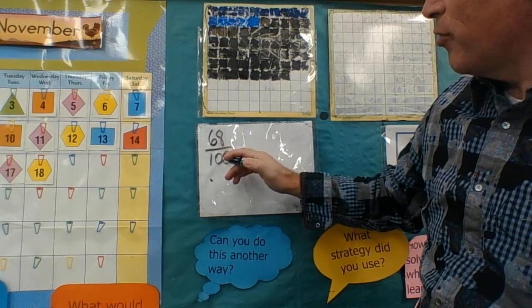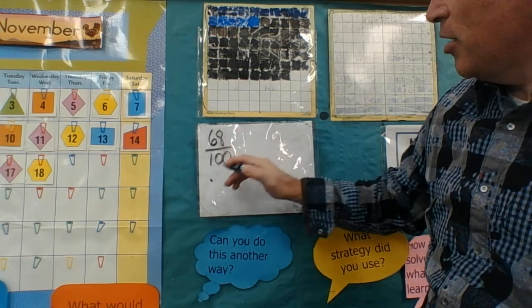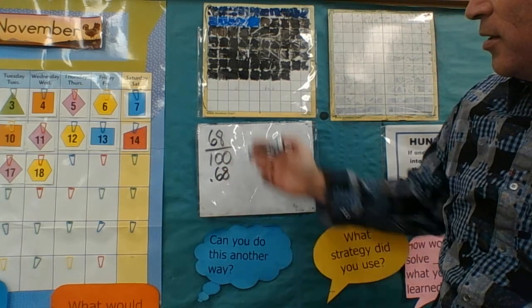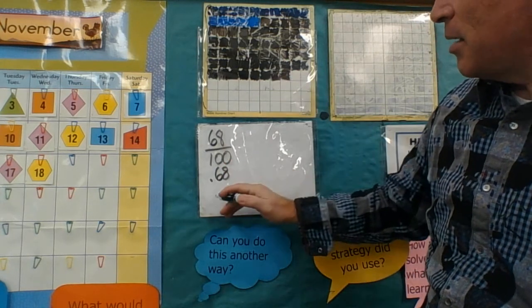And I showed you that 68 hundredths, that's the way you actually read this, 68 hundredths, is a homophone to 68 hundredths. So not only is it a homophone, but it actually means the same thing.